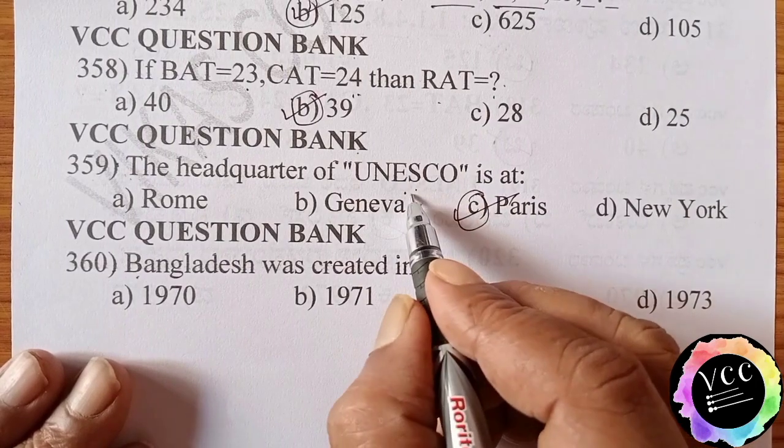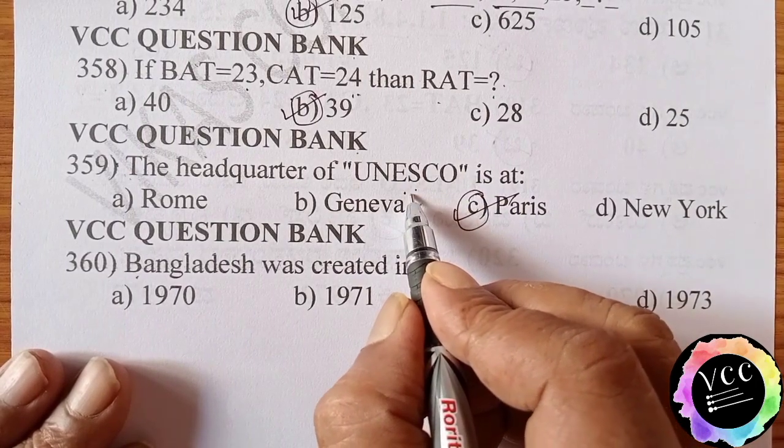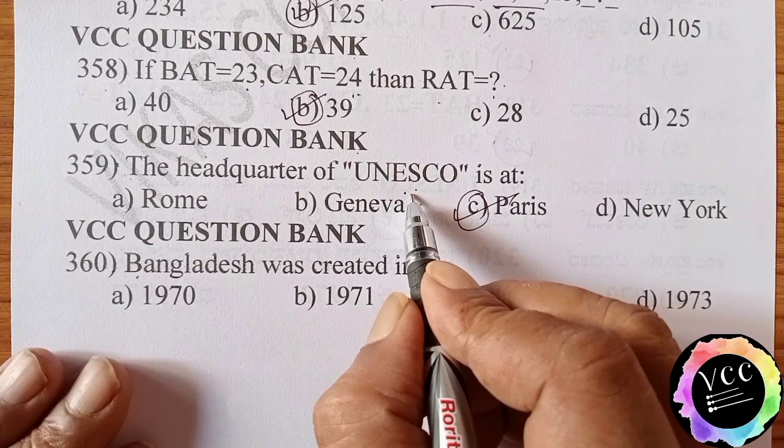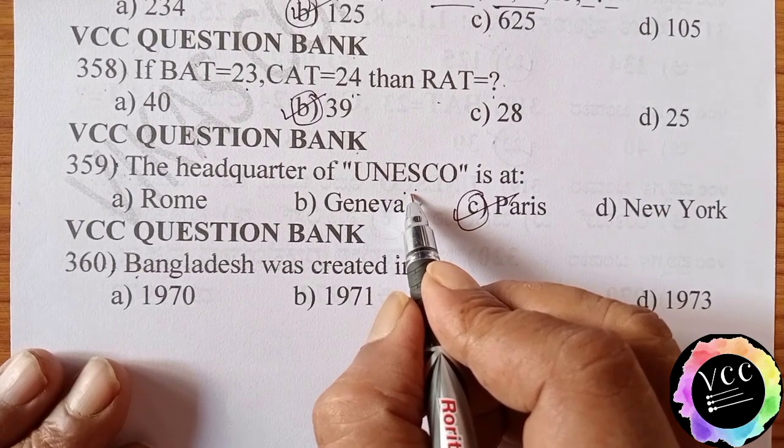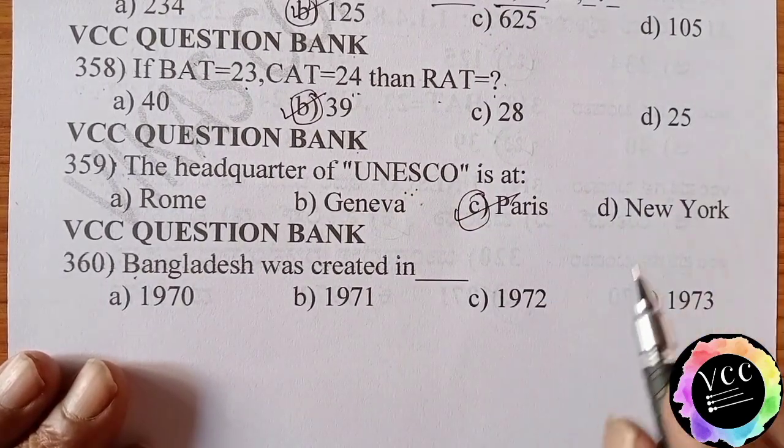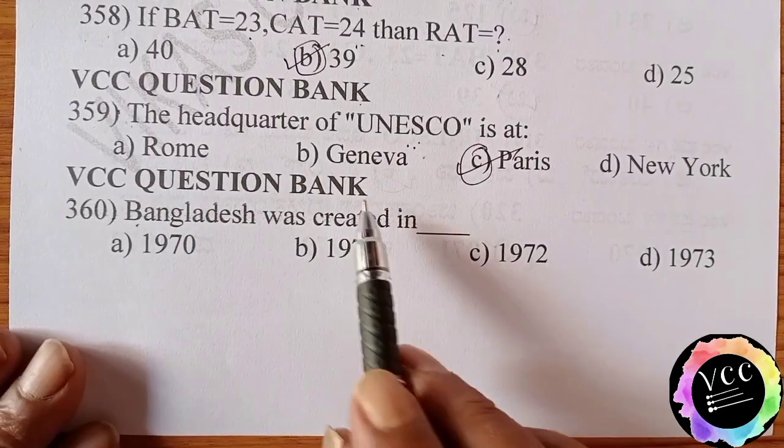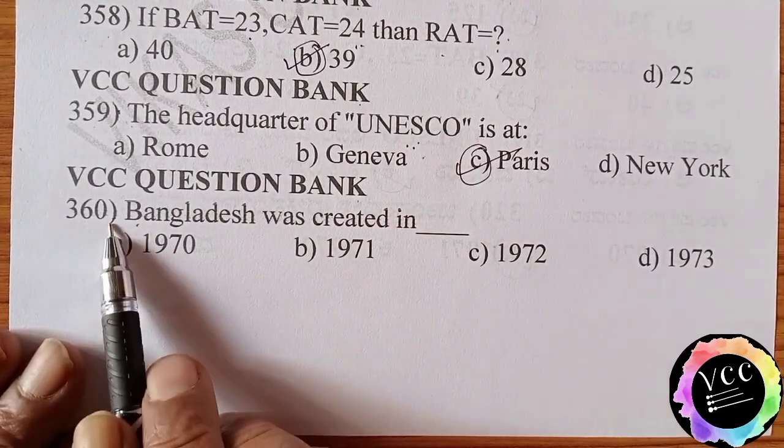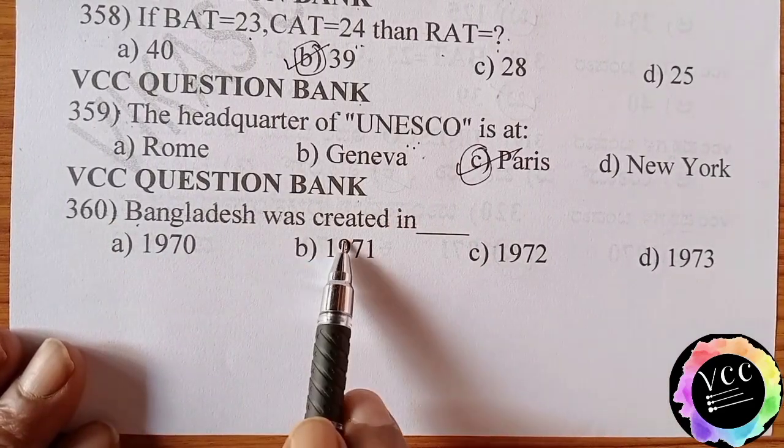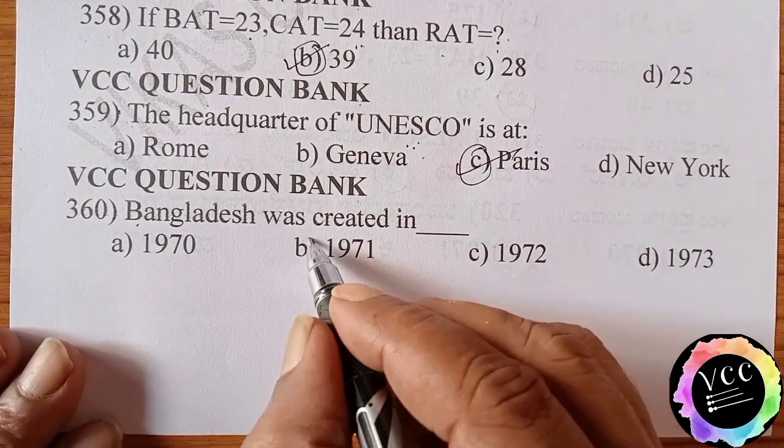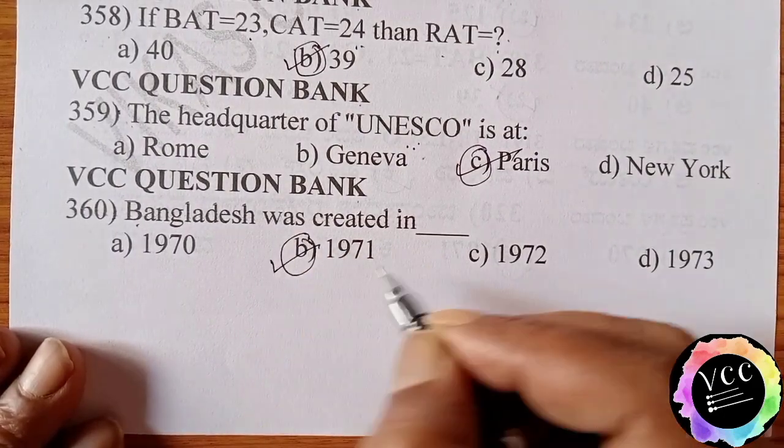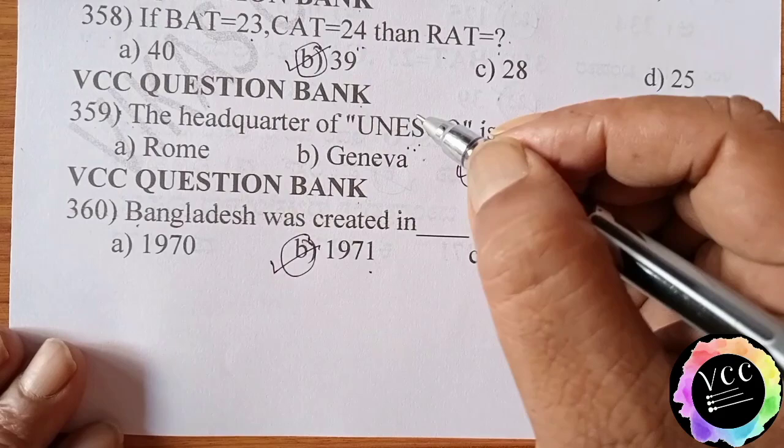Its function is cultural and social and educational. It gives importance for all countries. VCC question bank 360. Bangladesh created in, B option, 1971. Dear students, once again I am going to remind you.